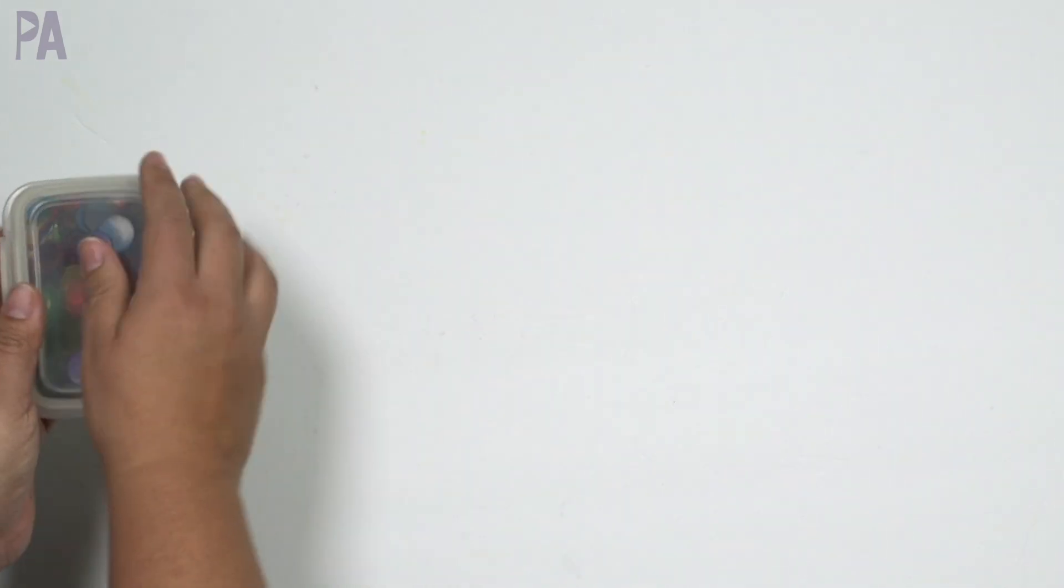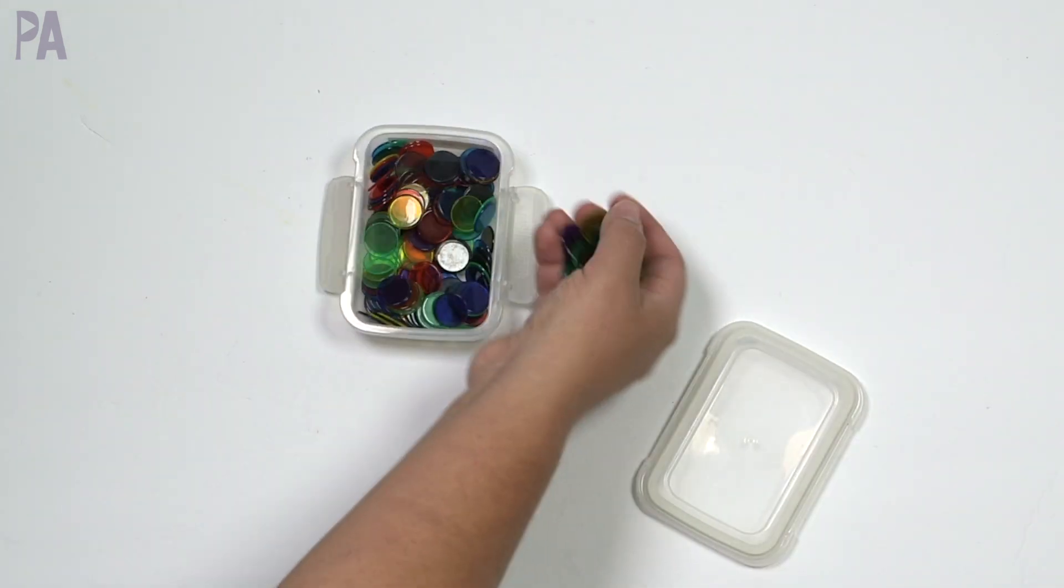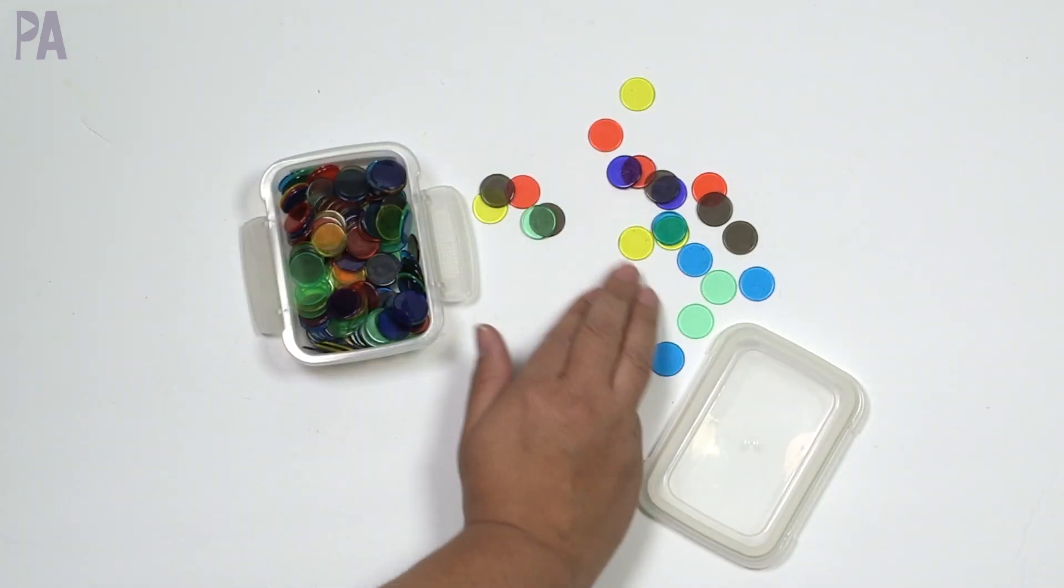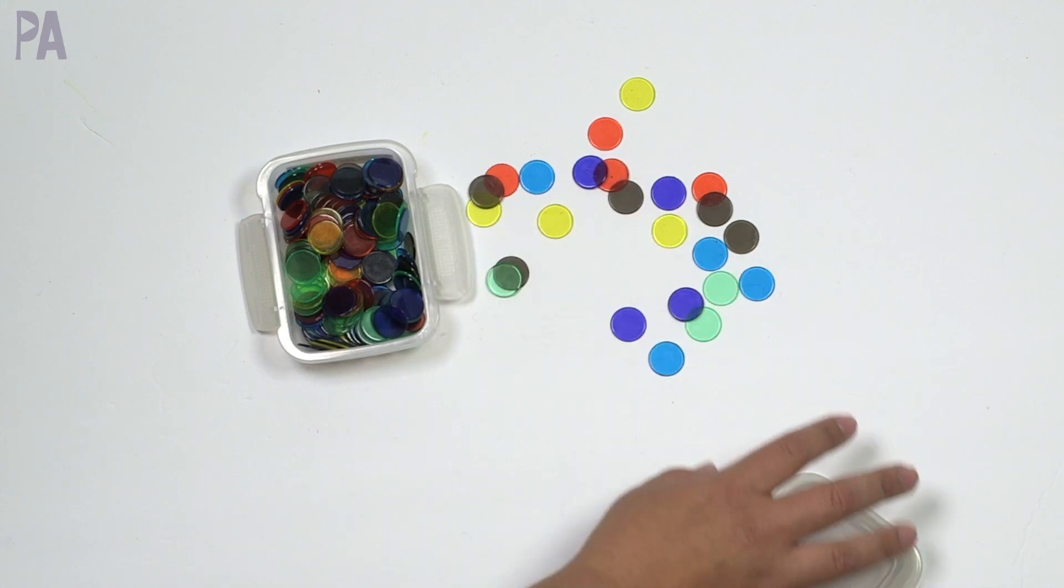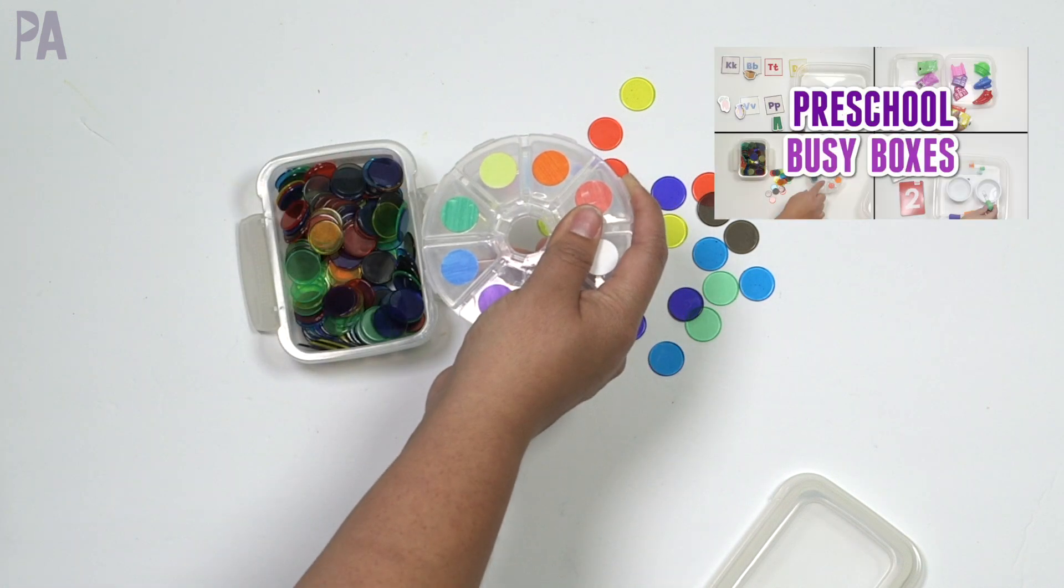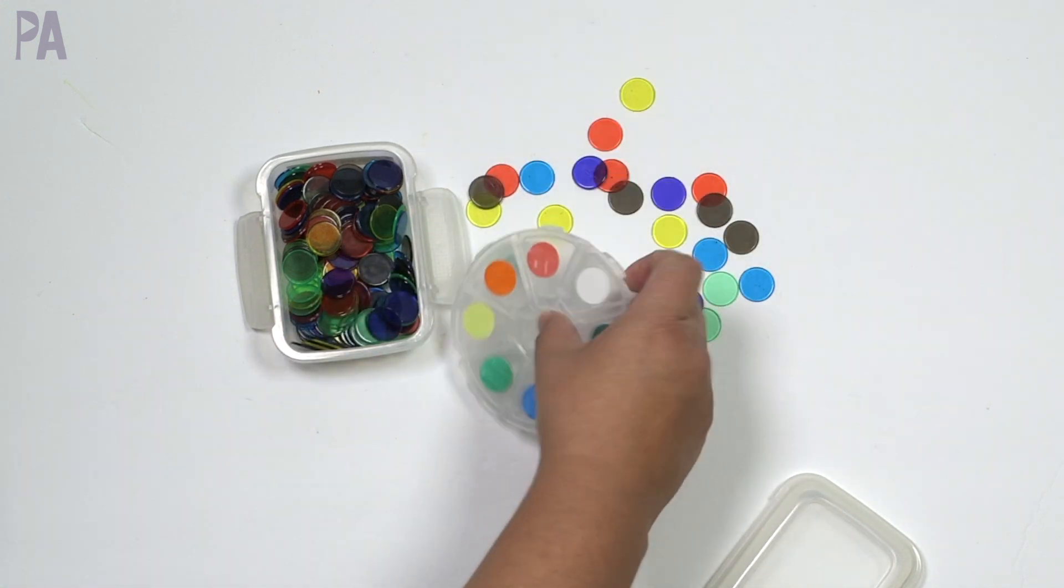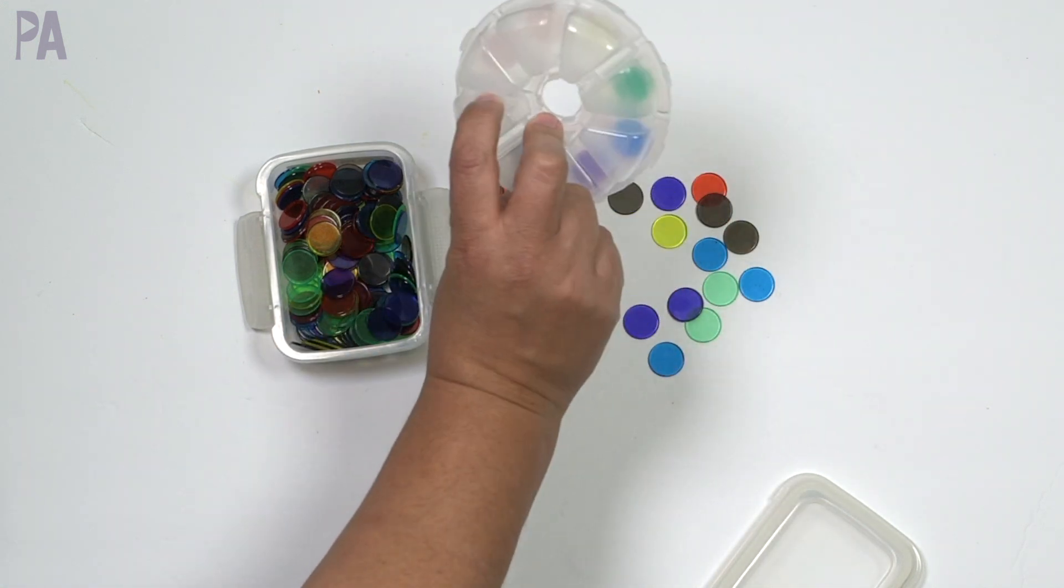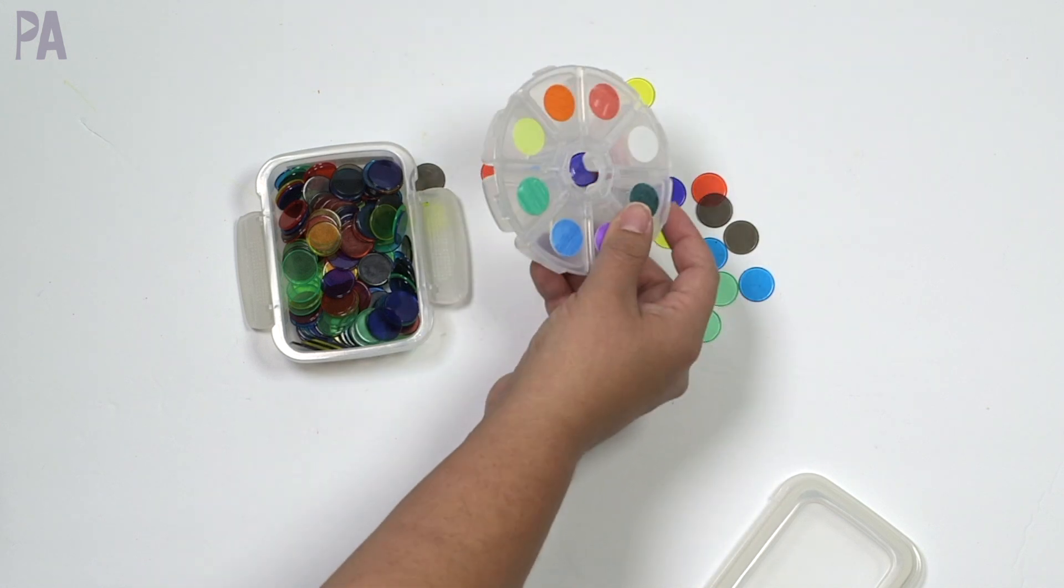You can also find these. These are counters. These are at the dollar store. So I wanted to mention some really affordable options too. And they are counting chips in different colors. You can do the exact same thing with this one. I actually showed in a video, I think it was preschool busy bins from Dollar Tree. This little container is also from the Dollar Tree. And the stickers are from Dollar Tree. And I colored them with markers.